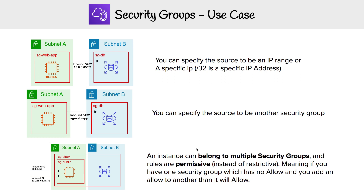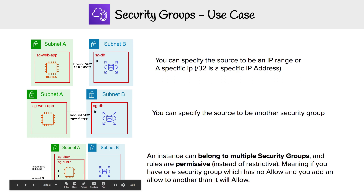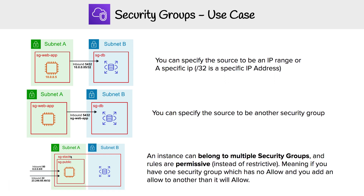The big takeaway here is that an instance can belong to multiple security groups, and rules are permissive. So when we have two security groups, if one has an allow rule, it takes precedence over a group that doesn't — because everything is denied by default, but anything that allows is going to override that. You can attach multiple security groups to one EC2 instance, so just keep that in mind.